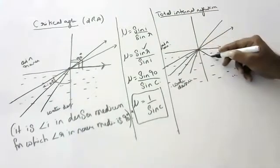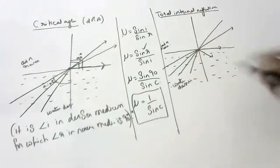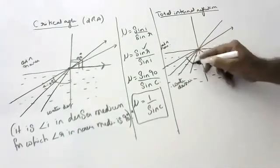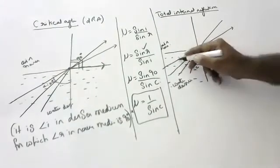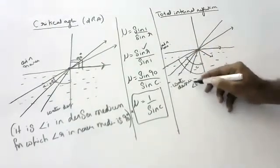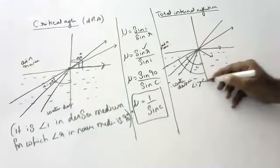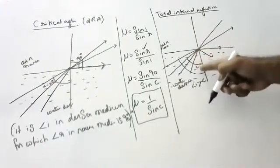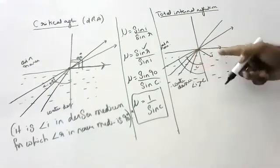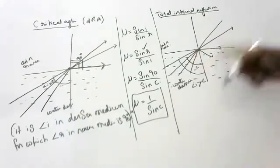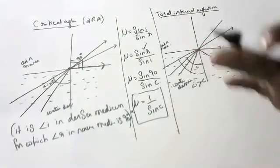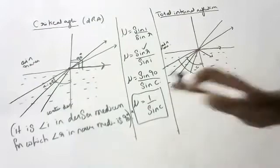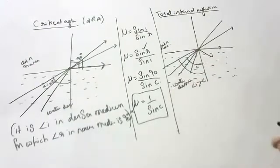If I still increase the angle beyond that point, the light comes back to the same medium. If I increase my angle of incidence more than the critical angle, the light ray comes back into the same medium — that is called total internal reflection.